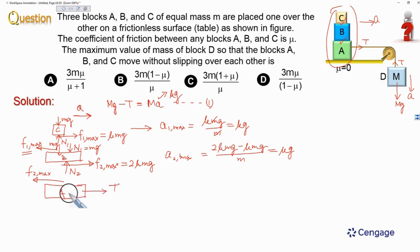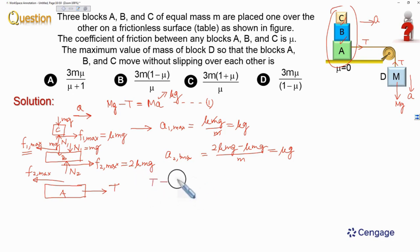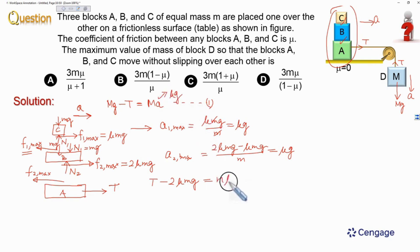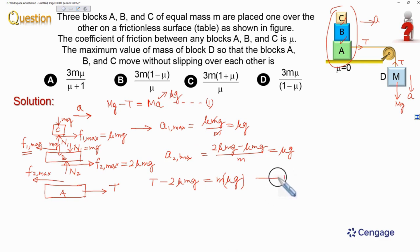Now we write the equation of motion for block A: T − 2 × mu × mg = m × a, and since a = mu × g, this gives T − 2mu×mg = m × mu × g. Let this be equation number 2.